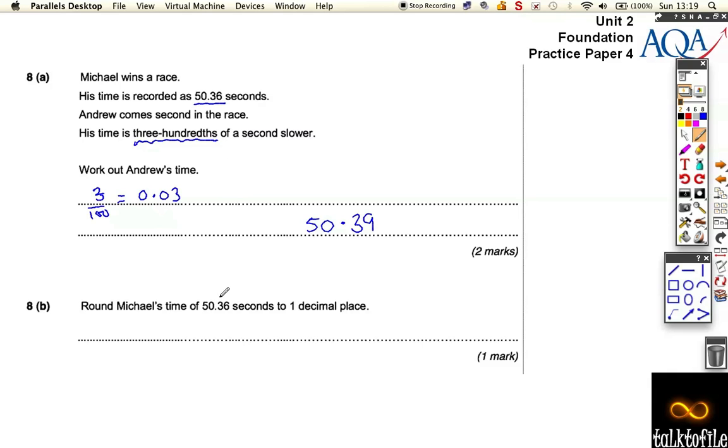one decimal place. We want to cut off between the three and the six. I need to check whether this number changes the three up or whether it stays the same.